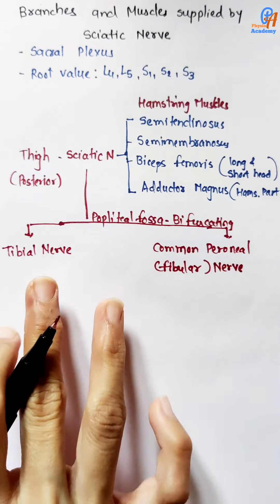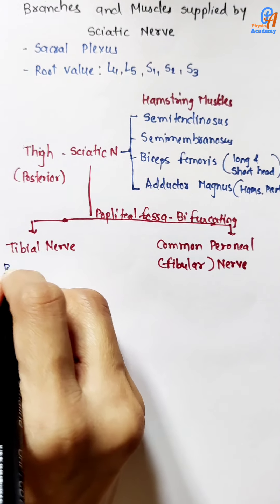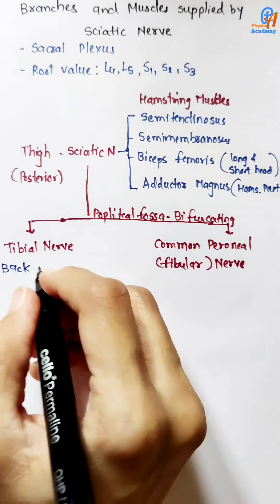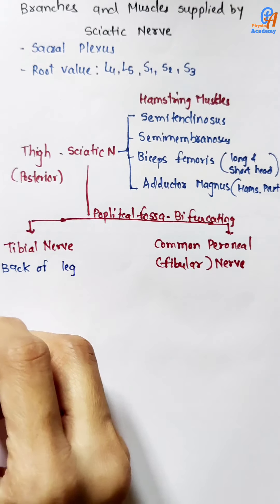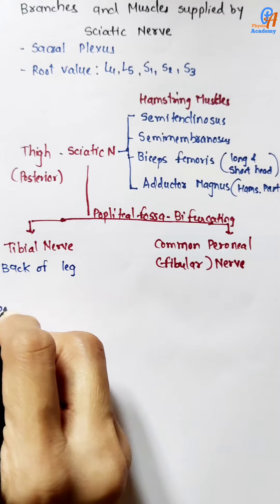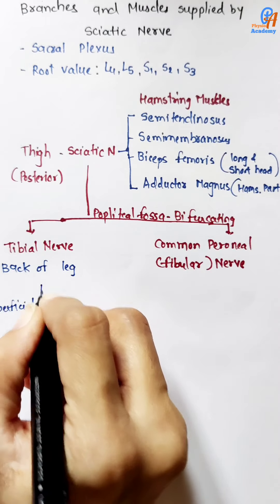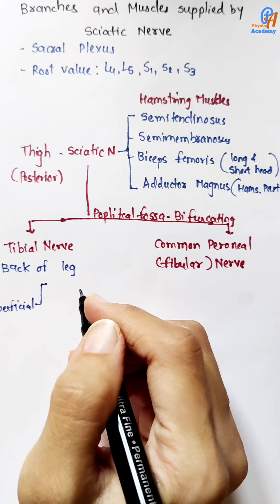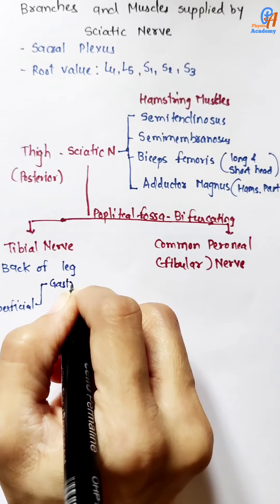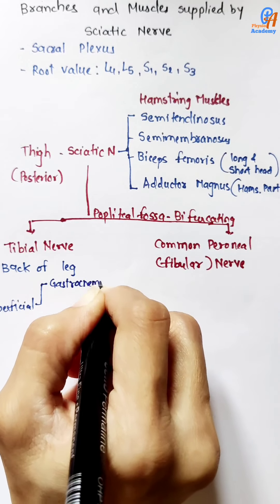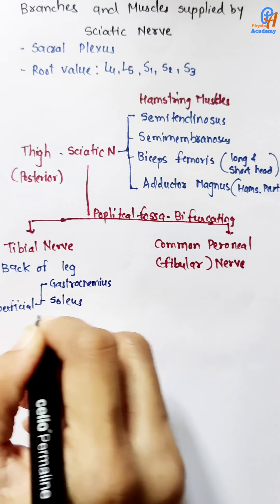The tibial nerve supplies the back of the leg — both the superficial and deep muscles. In the superficial muscles of the back of the leg, it supplies the plantar flexors of the ankle: gastrocnemius, soleus, and plantaris.